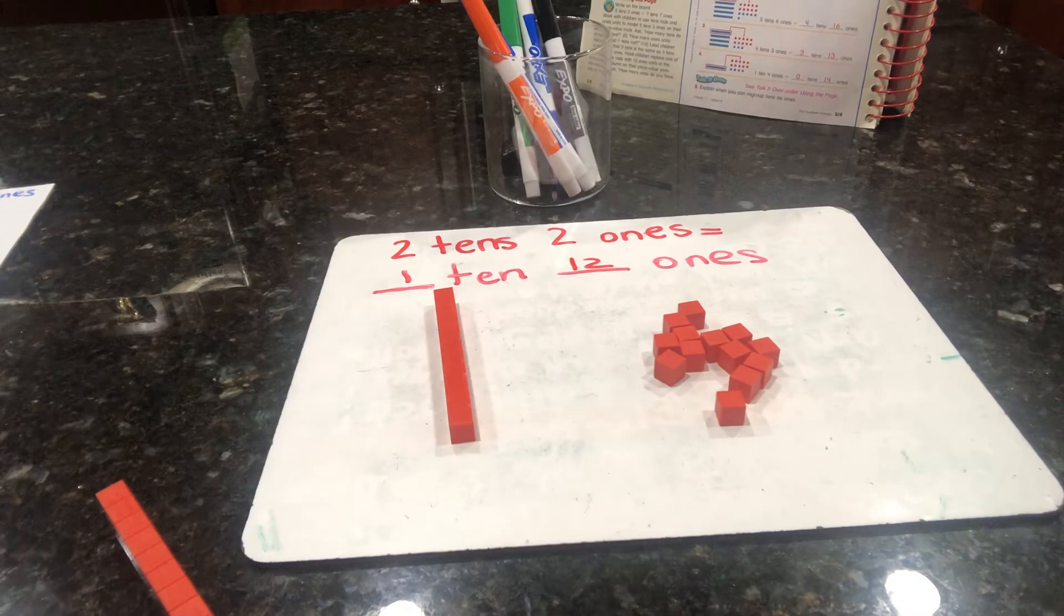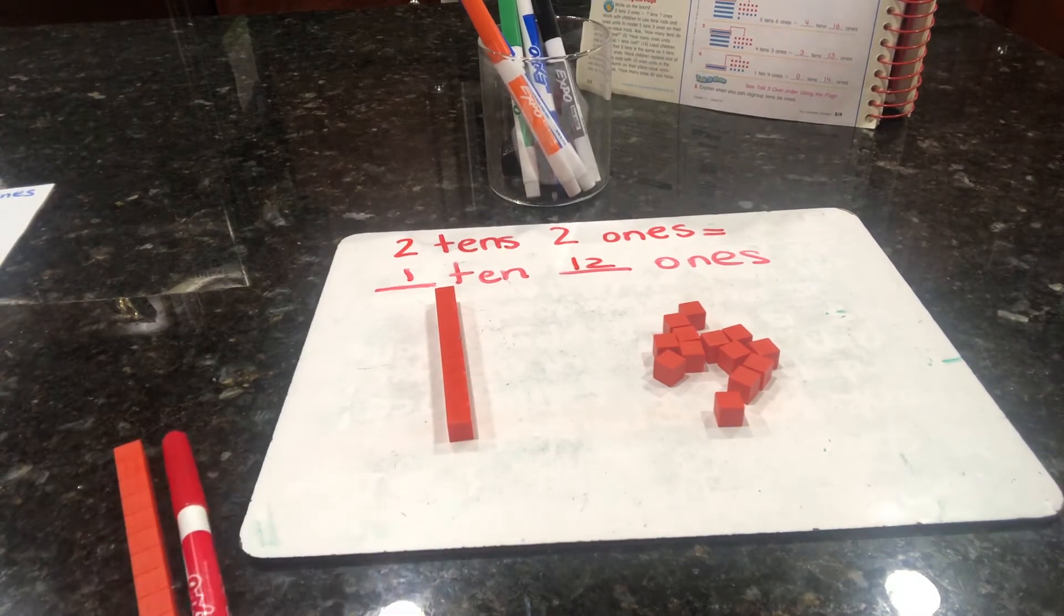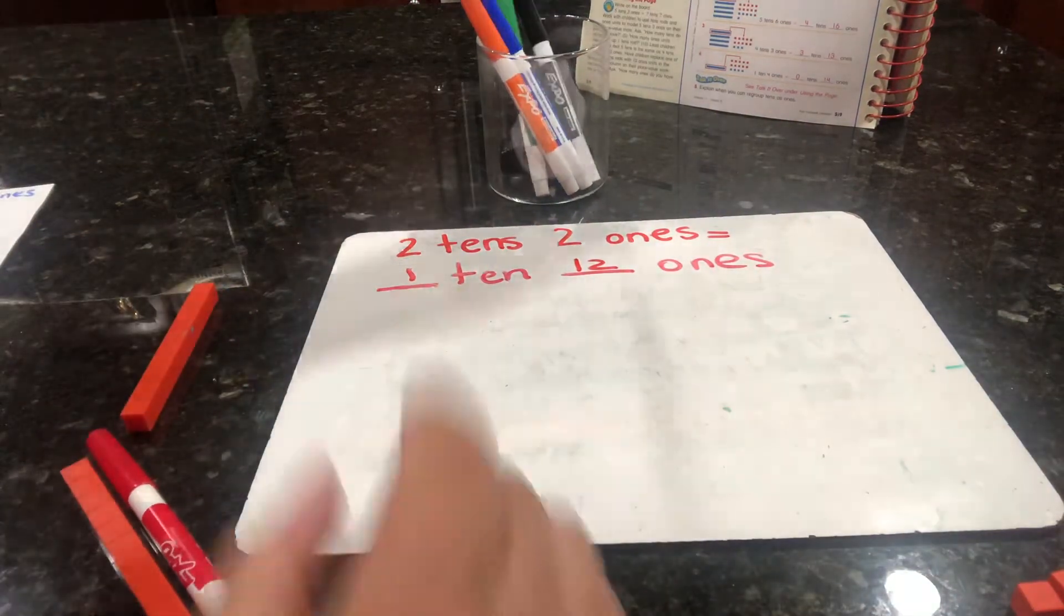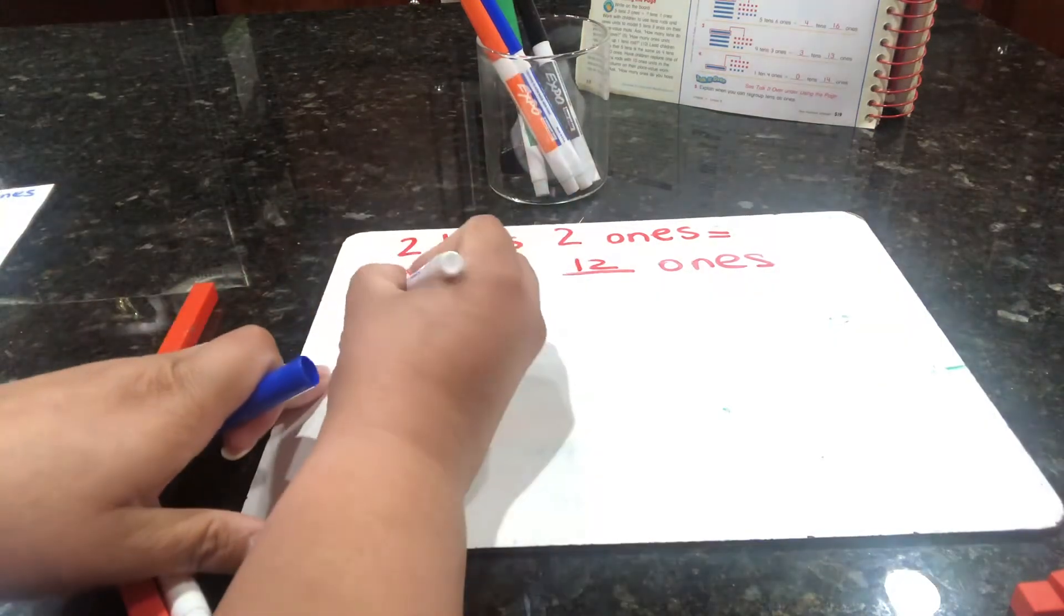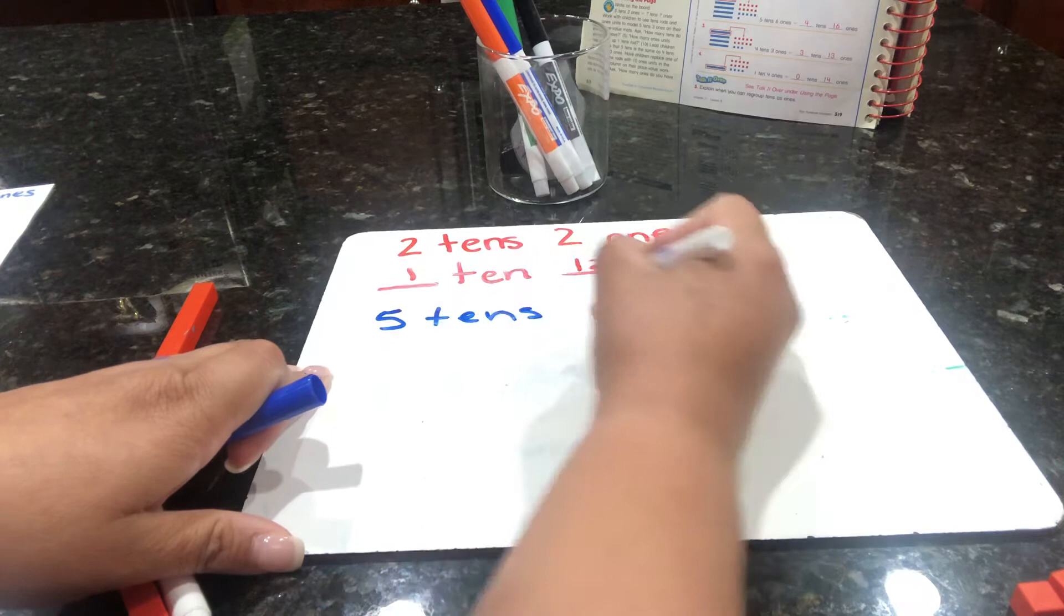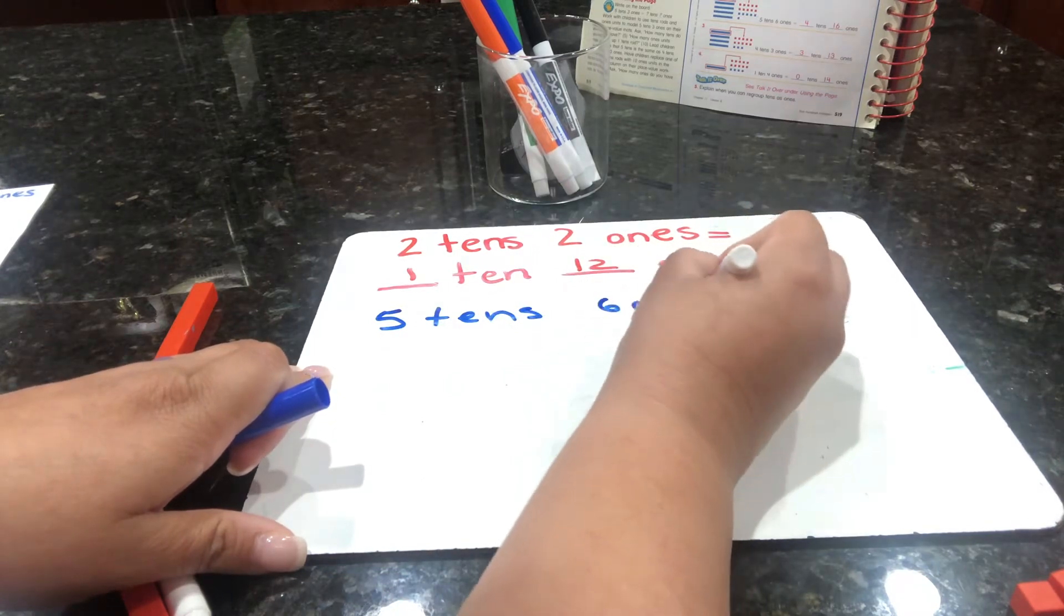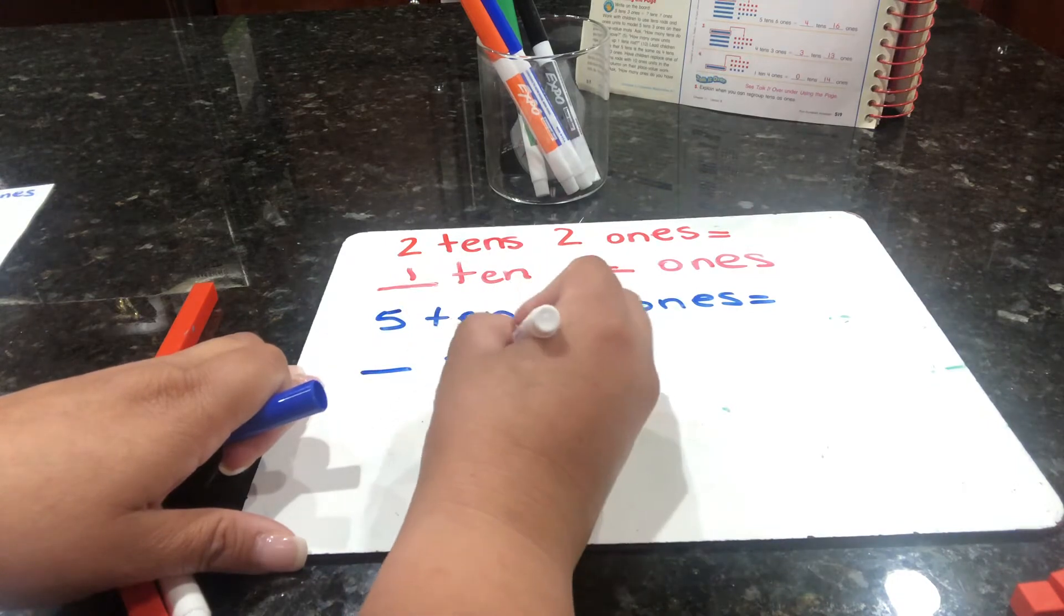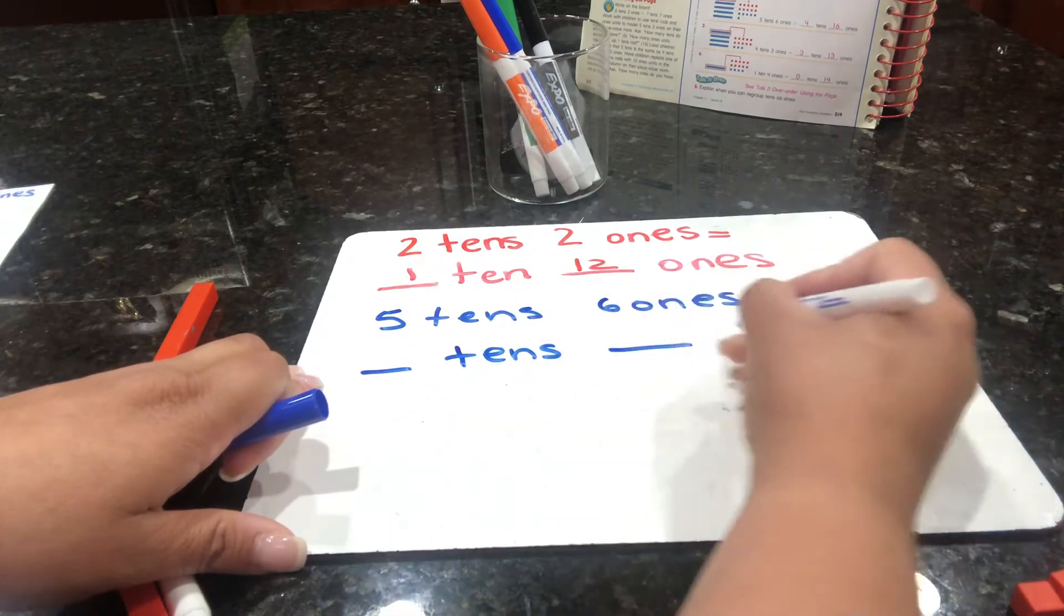Let's take a look at number two now. Number two says five tens six ones is the same as how many tens and how many ones?